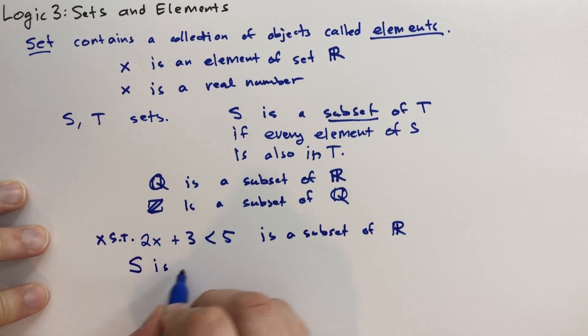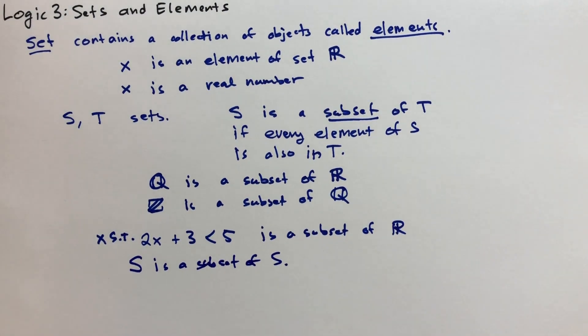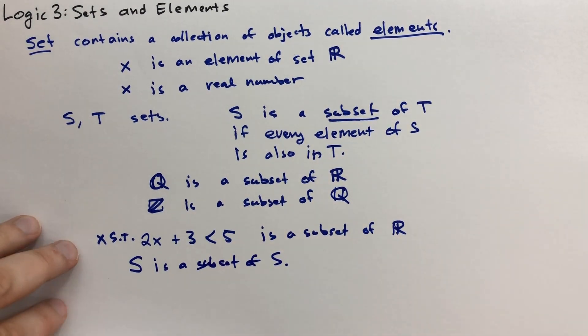S is a subset of S. So any set S is a subset of itself. Sometimes we have a condition that means there are no elements of a set. Let's take a look at what that looks like.